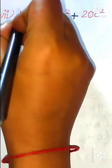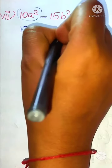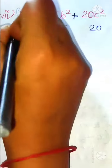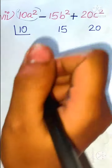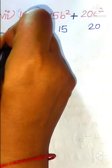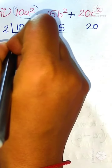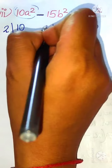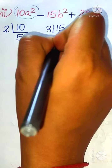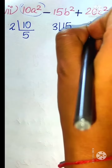Now we need to factorize the constants: 10, 15, and 20. The prime factorization of 10 — since 10 is divisible by the smallest prime number 2, we get 2 fives are 10. Since 5 is prime, we stop. For 15, it is not divisible by 2, so we divide by the next prime number 3: 3 fives are 15. Since 5 is prime, we stop.